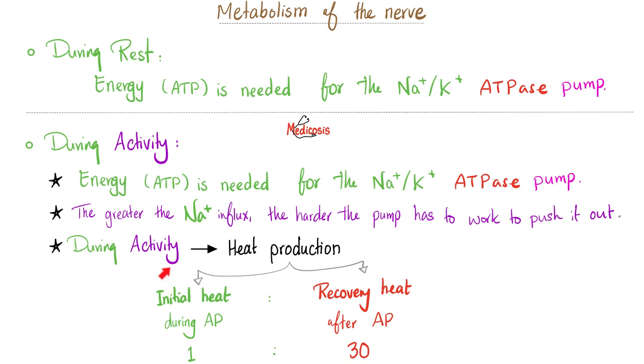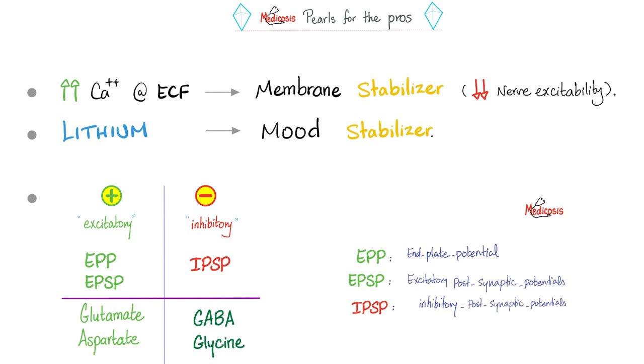Does the nerve need energy? Abso-freaking-lutely. It produces more heat during recovery than during depolarization. Increased calcium extracellularly is a membrane stabilizer. Lithium is a mood stabilizer. End plate potential is excitatory. Excitatory postsynaptic potential, they are excitatory. Well, no kidding, but the inhibitory postsynaptic potentials are inhibitory. Let's talk about neurotransmitters. Glutamate and aspartate are excitatory neurotransmitters, but GABA and glycine are inhibitory. And that's why benzodiazepines and barbiturates are sedatives and hypnotics. Oh, because when you stimulate the GABA, you get what? Inhibition. You are sedated. See, medicine makes so much sense once you understand what the flip you're talking about.